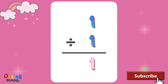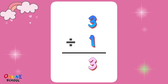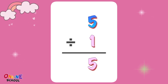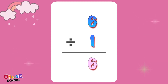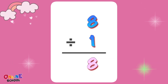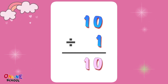1 divided by 1 equals 1. 2 divided by 1 equals 2. 3 divided by 1 equals 3. 4 divided by 1 equals 4. 5 divided by 1 equals 5. 6 divided by 1 equals 6. 7 divided by 1 equals 7. 8 divided by 1 equals 8. 9 divided by 1 equals 9. 10 divided by 1 equals 10.